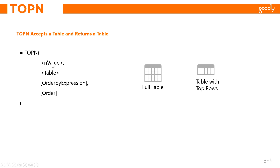In the N value you write three. So your TOPN input becomes TOPN(3, Sales) and you close the bracket. What this does is take the full sales table and extract the top three rows, giving you a full table with three rows — the actual first three rows of the sales table.